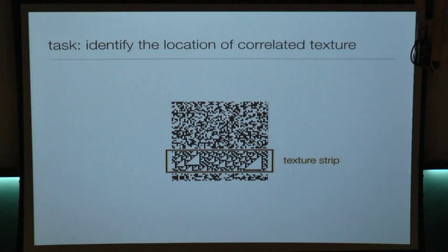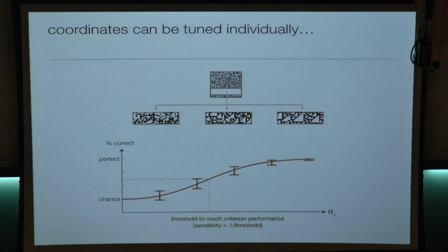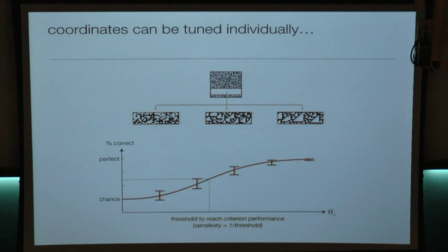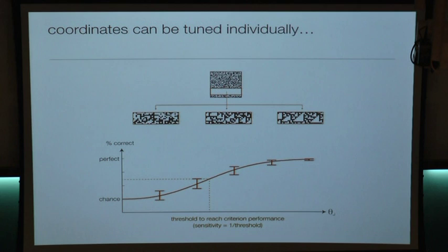As we tune down the strength of a coordinate, the target looks more and more like noise, making it more difficult to distinguish from the background. As we vary this parameter from zero to a large value, performance — measured by the fraction of correct responses — increases from chance toward perfect. We can characterize a threshold level of criterion performance as the coordinate value for which performance is halfway between chance and perfect. This tells us how high we have to tune up a coordinate knob before we can reliably distinguish a particular type of texture from noise.